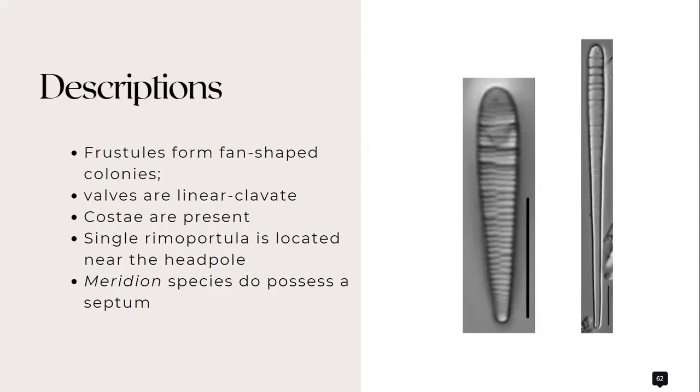In the figure here, the costae are only present towards the headpole and are not present towards the footpole. A narrow sternum is present running the length of the valve and a single rimoportula is located near the headpole.